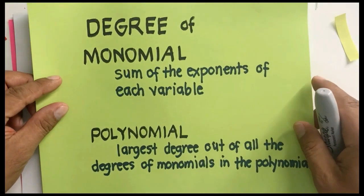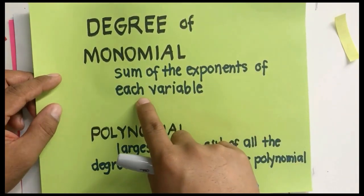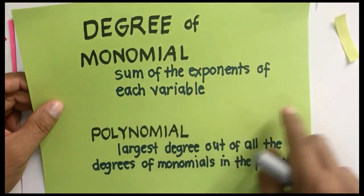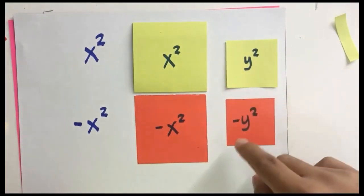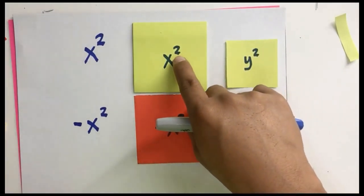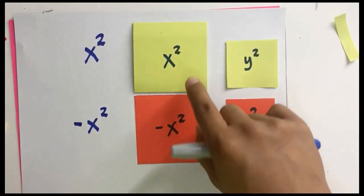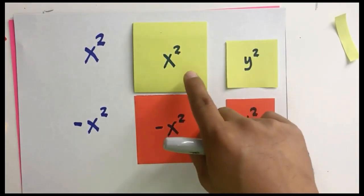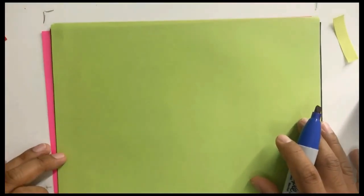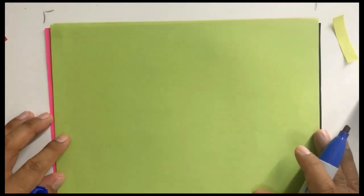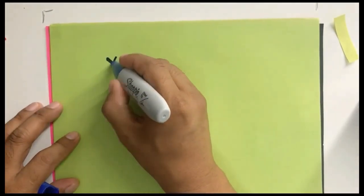The degree of a polynomial is determined by the sum of the exponents of each variable. When there is only one variable, just pick the highest exponent — that's the degree. In these cases, the degree is second degree. We can also have a third degree polynomial, and in fact polynomials of degree n, where n represents any positive integer.